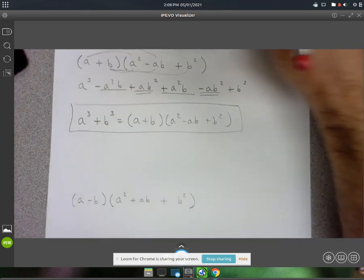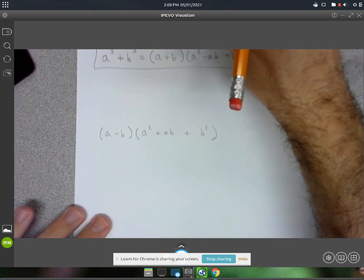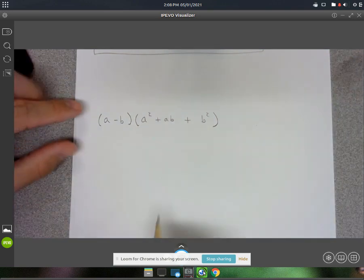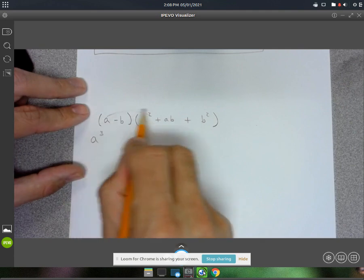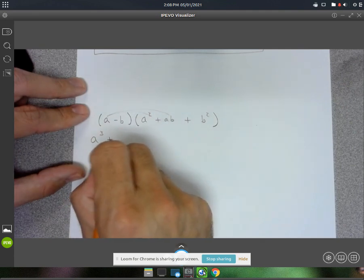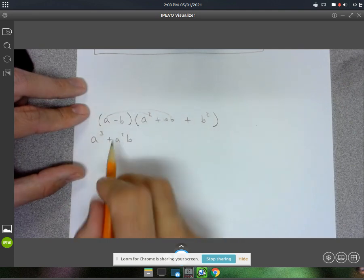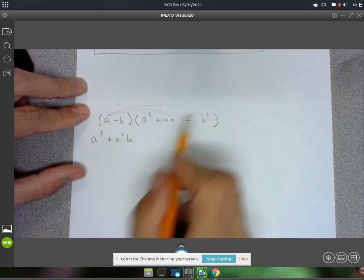Let's get the other one. It's going to work out pretty much the same. We're going to get a³, then a²b, so plus a²b, and then ab².